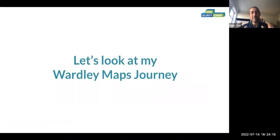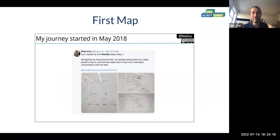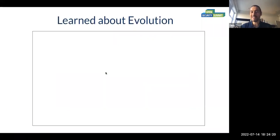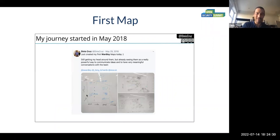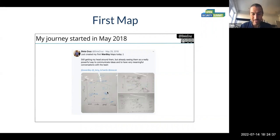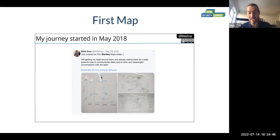Let's look at my journey into Wardley mapping. Here was my first map, which I basically did on a board and tweeted about — I use Twitter as my personal search engine so I can go back and find interesting things. This was a Wardley Map where I was trying to think about the whole Genesis, custom build, product, commodity chain, and we started to map things and think about the value chaining of what we do.